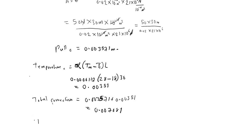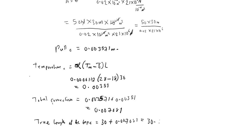The true length of the tape is the given nominal length plus the total correction: 30 + 0.007081 = 30.007081 meters.